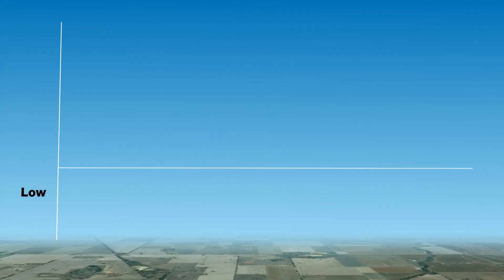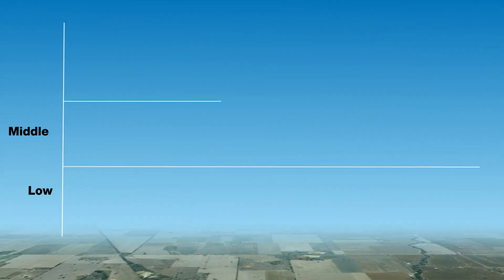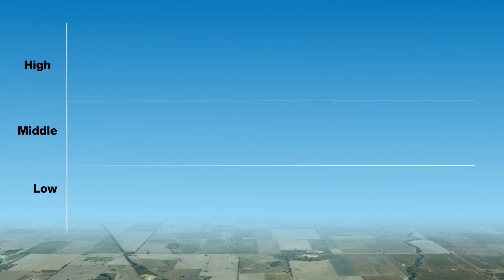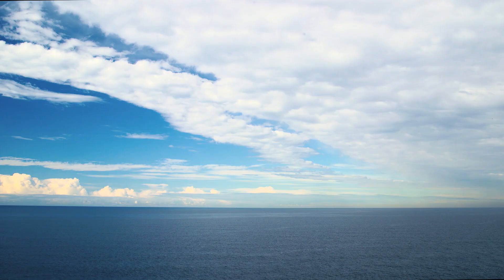There are many types of clouds. In fact, we can group these into ten main types, depending on where they sit in the atmosphere, whether they're in the lower part of the atmosphere, the middle, or the higher parts.